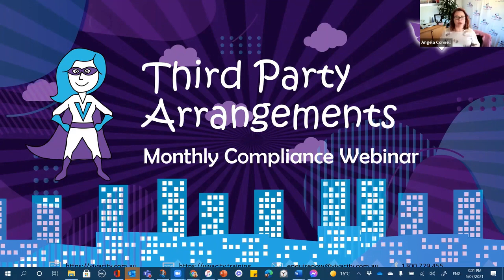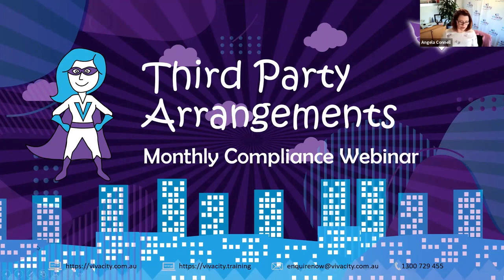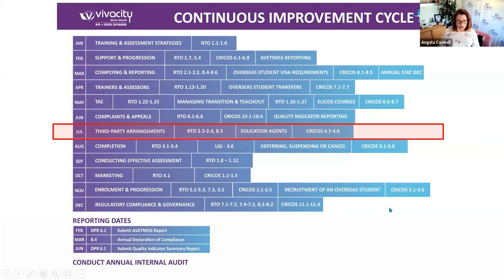Welcome everybody to the compliance webinar. Today we're going to be going through third party arrangements and what you need to be aware of when it comes to third parties, how to make sure that you're compliant but also protecting yourself as an RTO. As per the continuous improvement cycle, we are looking at standards 2.3 to 2.4 and 8.3. We'll also be covering education agents, which are also third parties, under CRICOS standards 4.1 to 4.6.